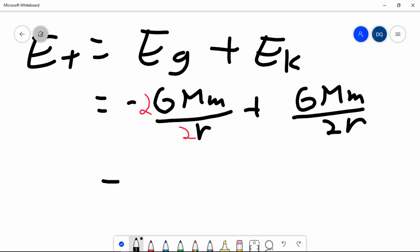And that's to make it clear to you why that comes out to negative GMM over 2R. That's the total amount of mechanical energy, the sum total of the gravitational potential plus the kinetic energy that it has.